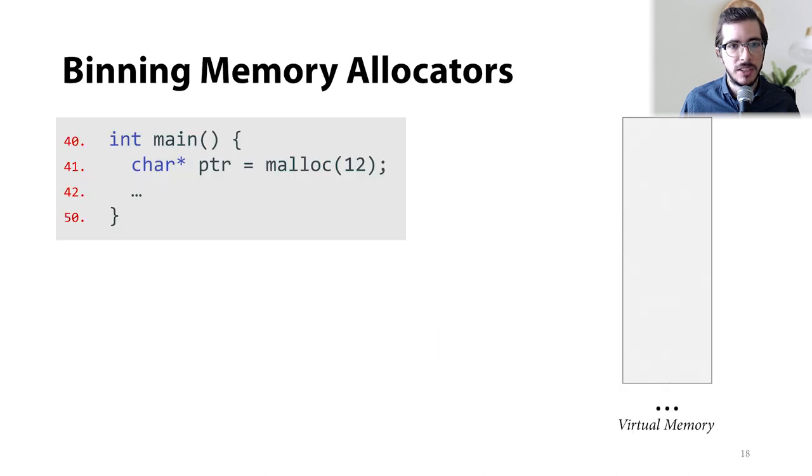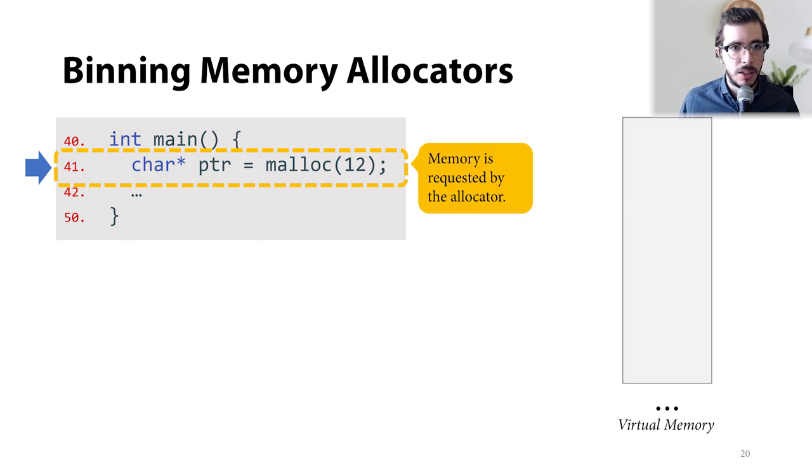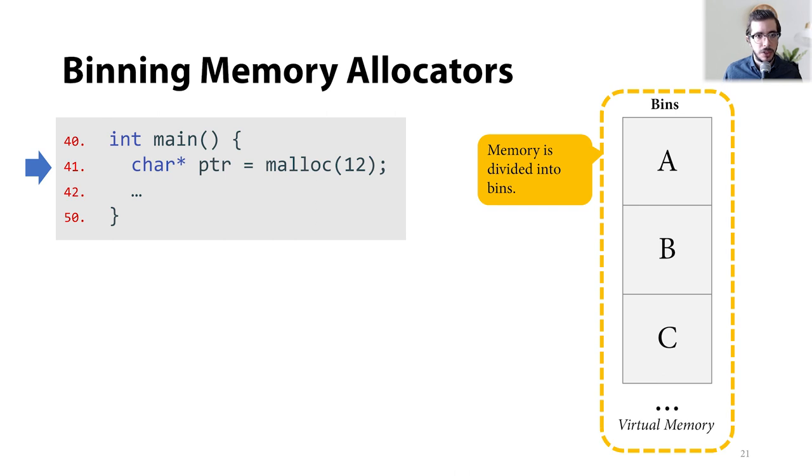Now, let's start with a crash course on binning memory allocators. Let's consider a simple program with one main function that is defined in line 40. Here, the program wants to reserve some memory to operate on. So, it invokes malloc, as shown in line 41, and it gives it the required size, here 12. This call to malloc invokes the memory allocator, which is supposed to allocate 12 bytes on the heap. And then it returns a starting address to the program to continue execution.